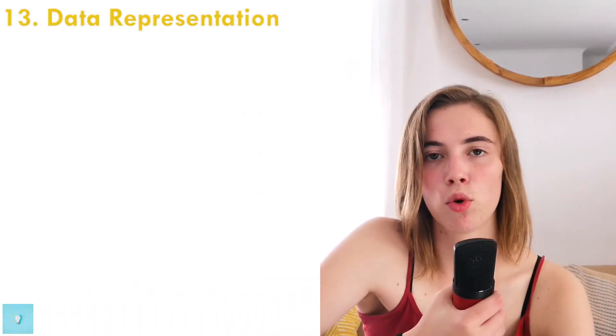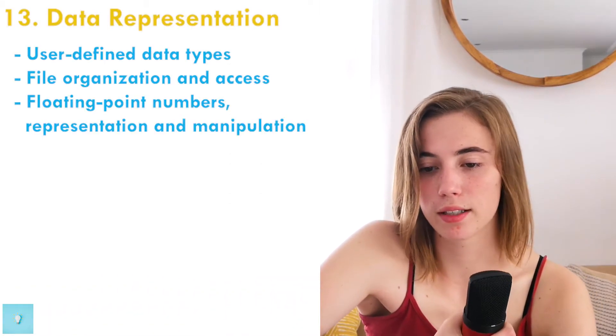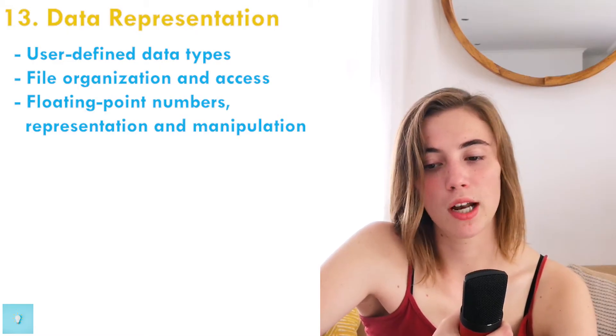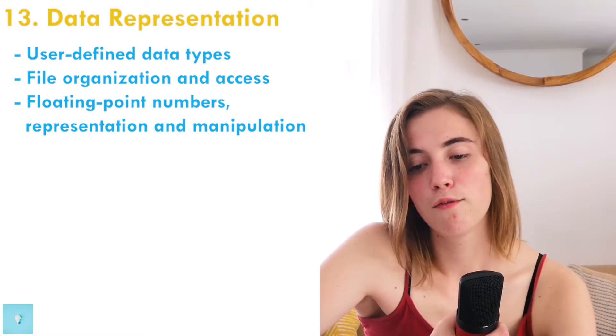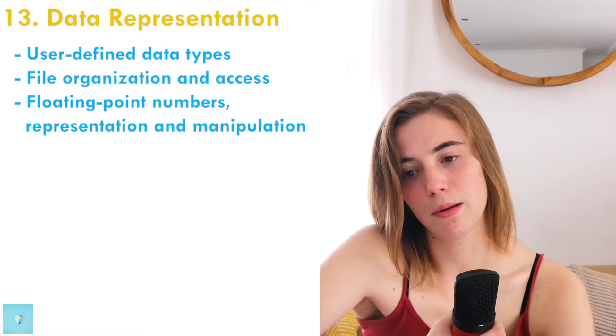The A-level content overview starts at item 13, since the AS level video covered items one through twelve. The 13th thing you need to know is data representation — more advanced programming content including user-defined data types, file organization and access, floating point numbers, representation and manipulation.